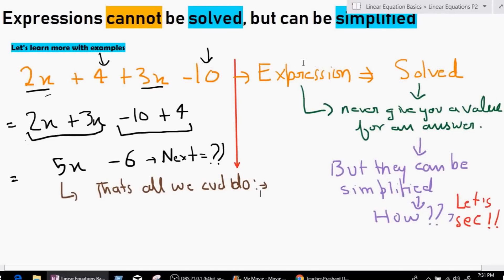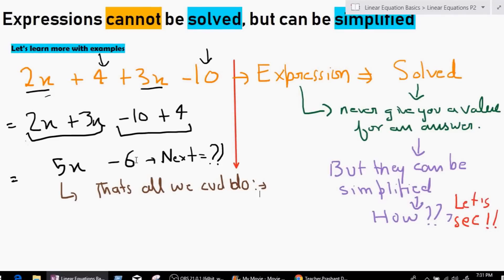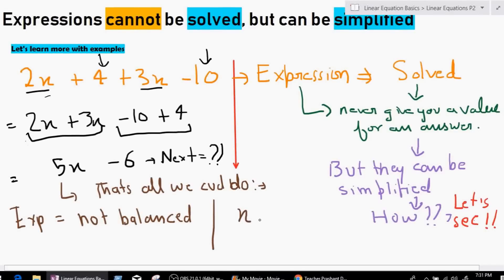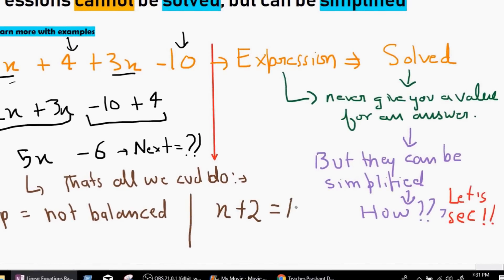So, as I said, expressions cannot be solved because they cannot give you an answer. And the reason why they can't give you an answer because there is no other expression which represent them on the other side. Simple words, expressions are not balanced. For example, x, what is x? We don't know what is x. What if I say x plus 2? We still don't know what is x. So what about if I say x plus 2 equals 10? So now we know x is 8. See, this is an expression. Expression has nothing to balance itself on the other side of the equal to. That's why we can't find the value.